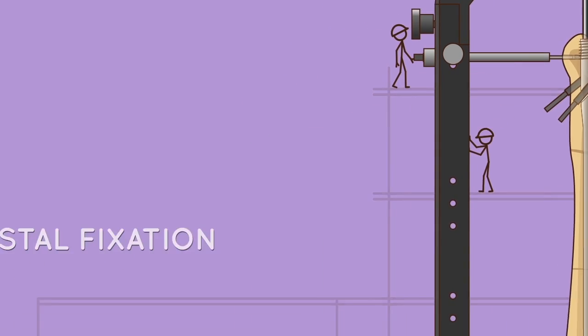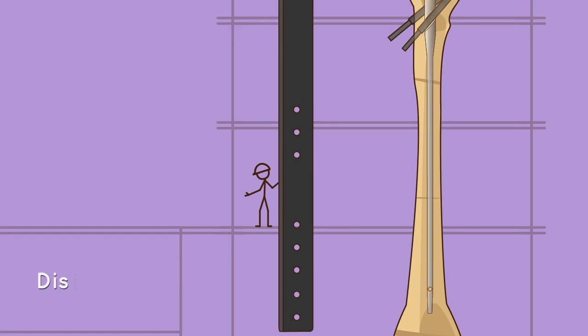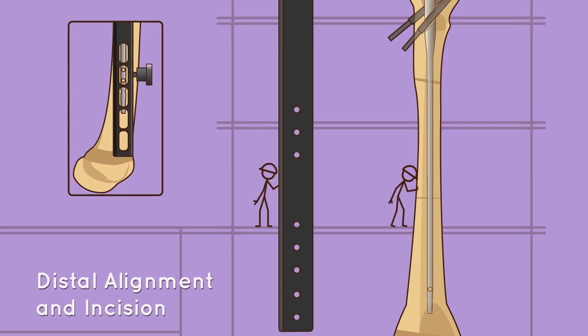Distal fixation - distal alignment and incision: check the distal alignment using a C-arm. The holes should appear perfectly circular. Make a stab incision over the proper hole position.